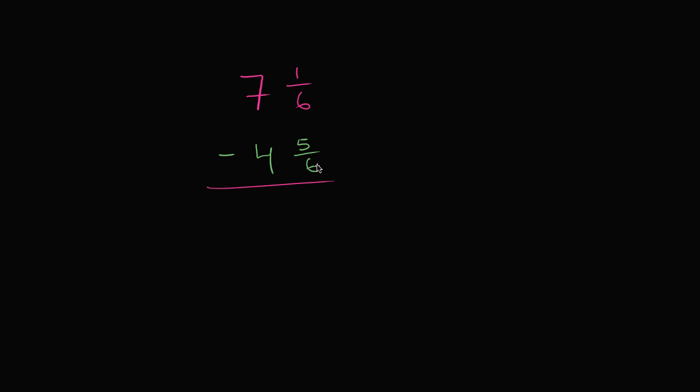So what is this going to be equal to? Well, when we try to subtract 5 sixths from 1 sixth, that's hard. 5 sixths is larger than 1 sixth. But we can regroup. We can take 1 from here, so the 7 becomes a 6. And then we take that 1, which is the same thing as 6 sixths, and add it to 1 sixth. So 1 sixth plus 6 sixths is 7 sixths.